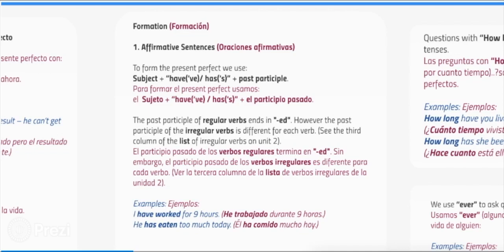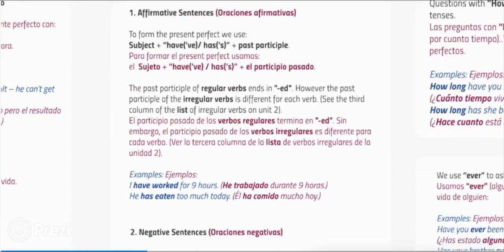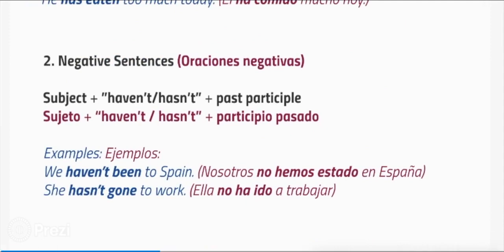He has eaten too much today. Negative sentences: subject plus haven't or hasn't plus past participle. Examples: we haven't been to Spain; she hasn't gone to work.